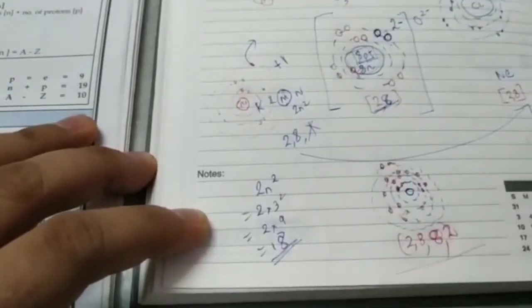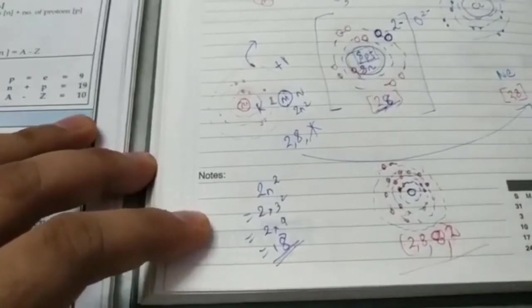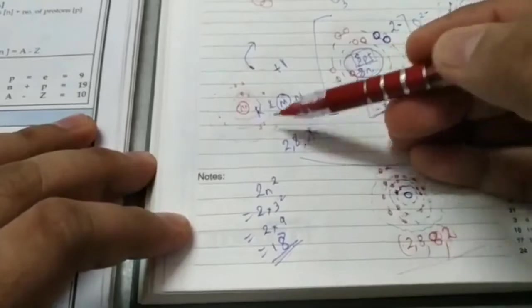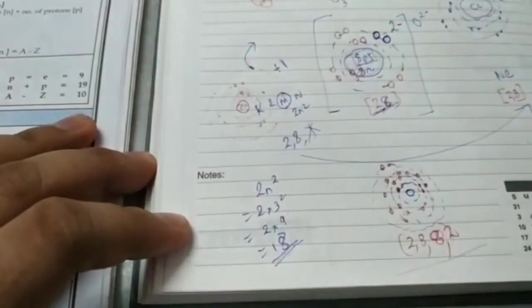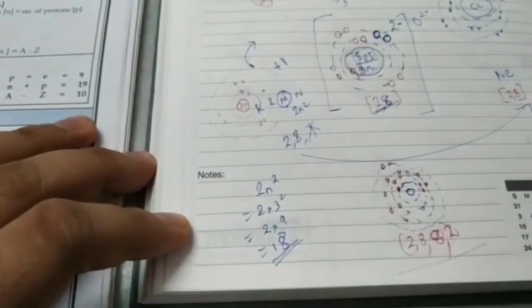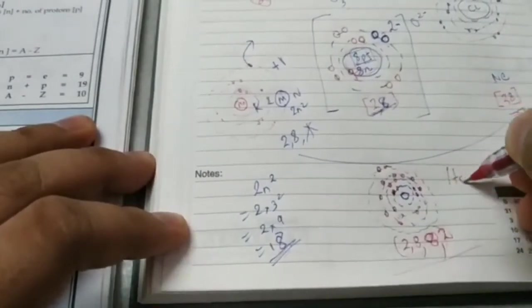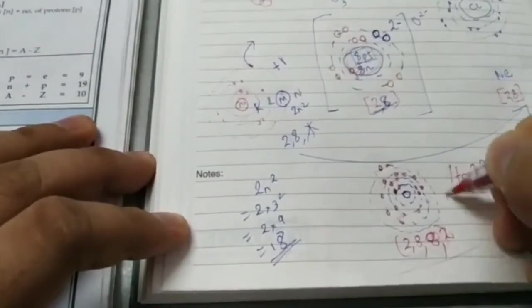Now the reason behind this will be explained in college level. You see, each shell has sub-shells, S, P, D, F, which is not there in school syllabus, so don't worry about it. You just have to know that there are certain rules to follow. And fortunately, we just have to know the electronic configurations of elements 1 to 20. That's all.